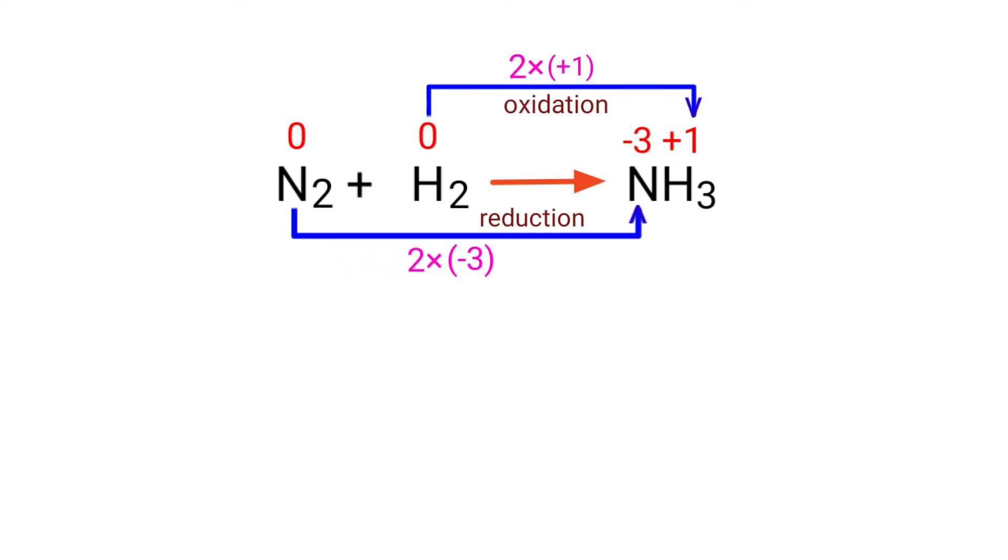Now you can make the increased oxidation number equivalent to the decreased oxidation number. To do this, multiply the increased oxidation number by a coefficient of 3. Now write the equation as N2 plus 3H2 yields NH3.